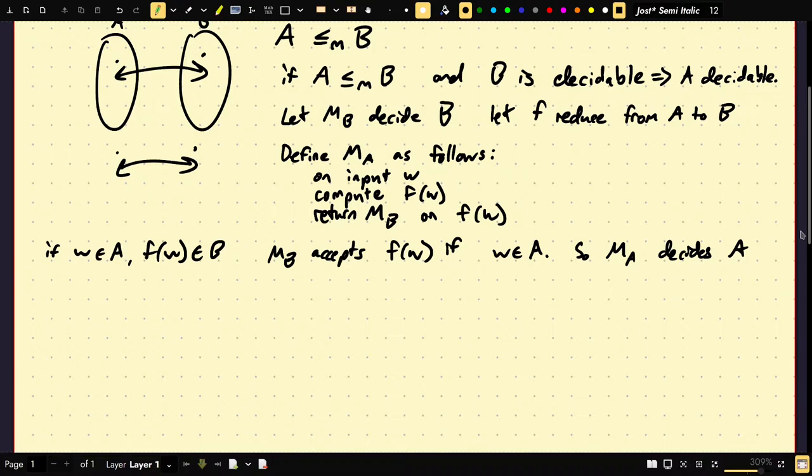So, that's actually not so much that something we care about. Showing something is decidable is kind of easy. Showing something is undecidable is much more useful. So, from this follows the following corollaries. If A is reducible to B, A is undecidable, this implies that B is undecidable.